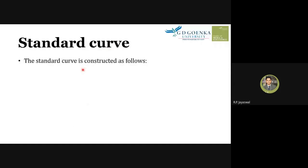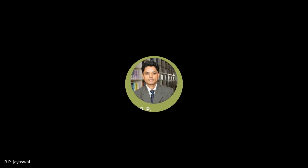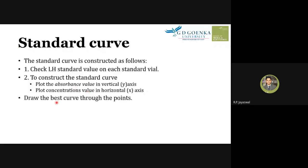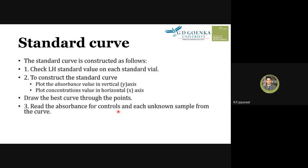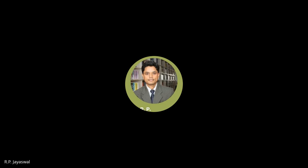For the standard curve: note the LH standard values on each of the seven vials. Plot absorbance on the y-axis and concentration on the x-axis. Draw the best-fit curve through the points. For unknown samples, find the absorbance on the y-axis, draw a horizontal line to the curve, then read the concentration on the x-axis. If samples were diluted, multiply by the dilution factor.